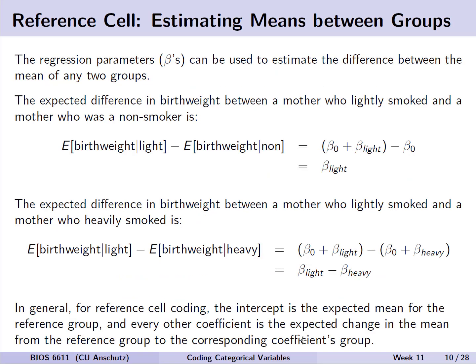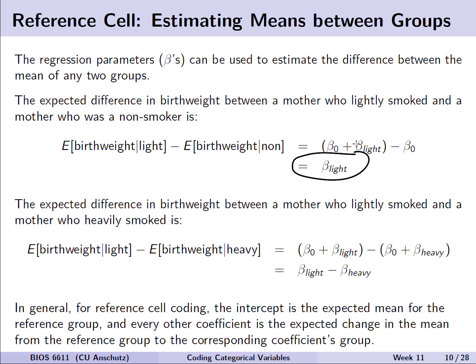We can also estimate means by comparing groups. Much like with multiple linear regression more generally, the regression parameters betas can be used to estimate the difference between the mean of any two groups. The expected difference in birth weight between a mother who lightly smoked compared to a non-smoker is beta-light — the intercepts cancel out. We can also calculate the difference between two non-reference categories, for example light and heavy smokers, where the intercepts cancel and we get beta-light minus beta-heavy. In general, the intercept is the expected mean for the reference group, and every other coefficient is the expected change from that reference group.